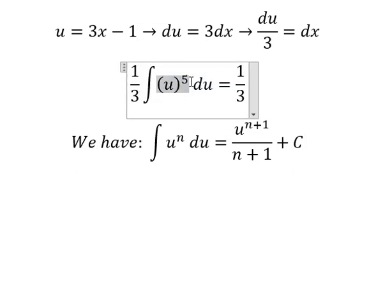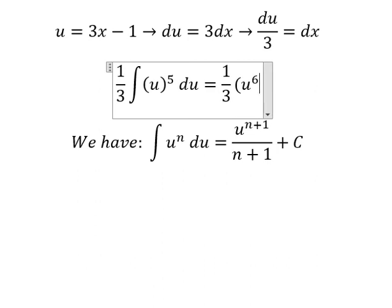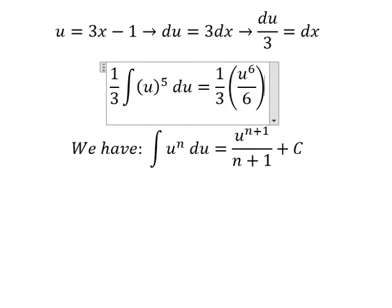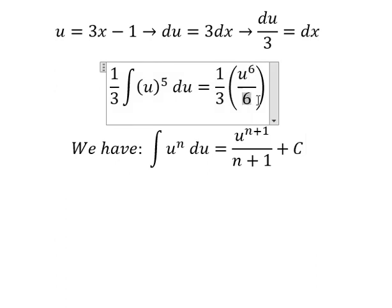The integration gives us u to the power of 6 over 6. I'll put n equals 5, so n plus 1 equals 5 plus 1, which is 6. That's why we have u^6 and the denominator 6.